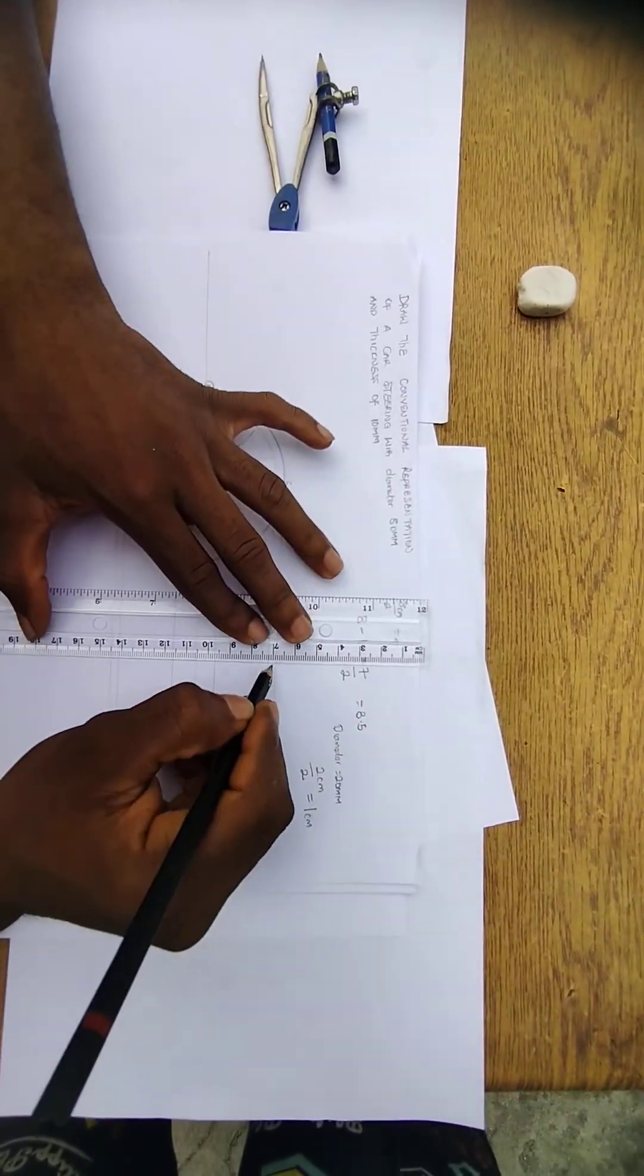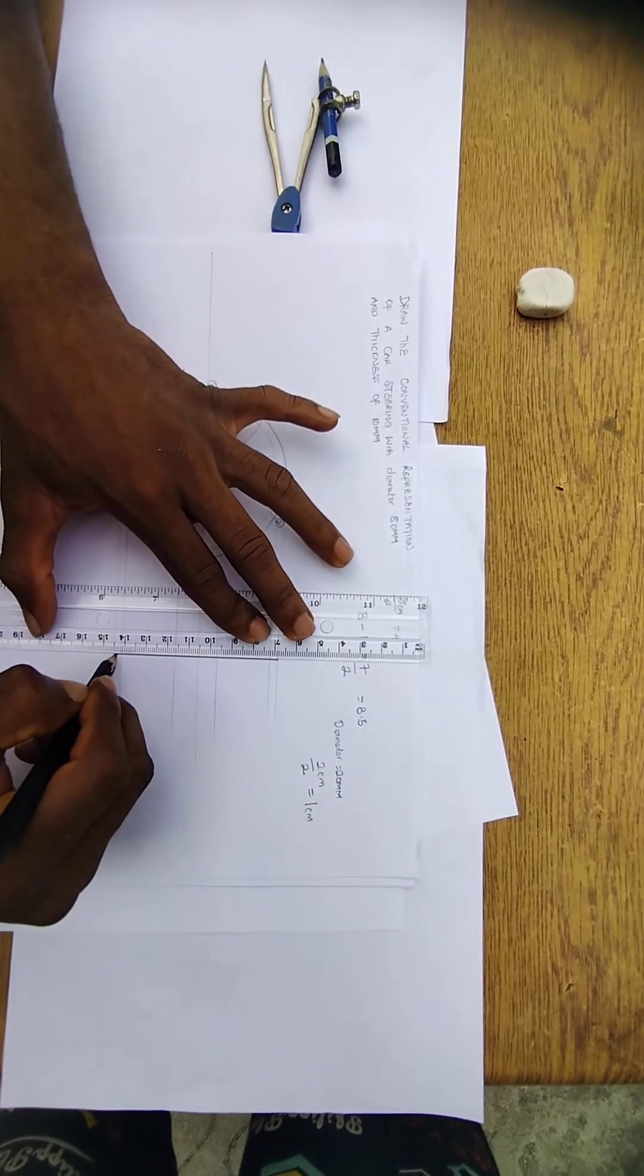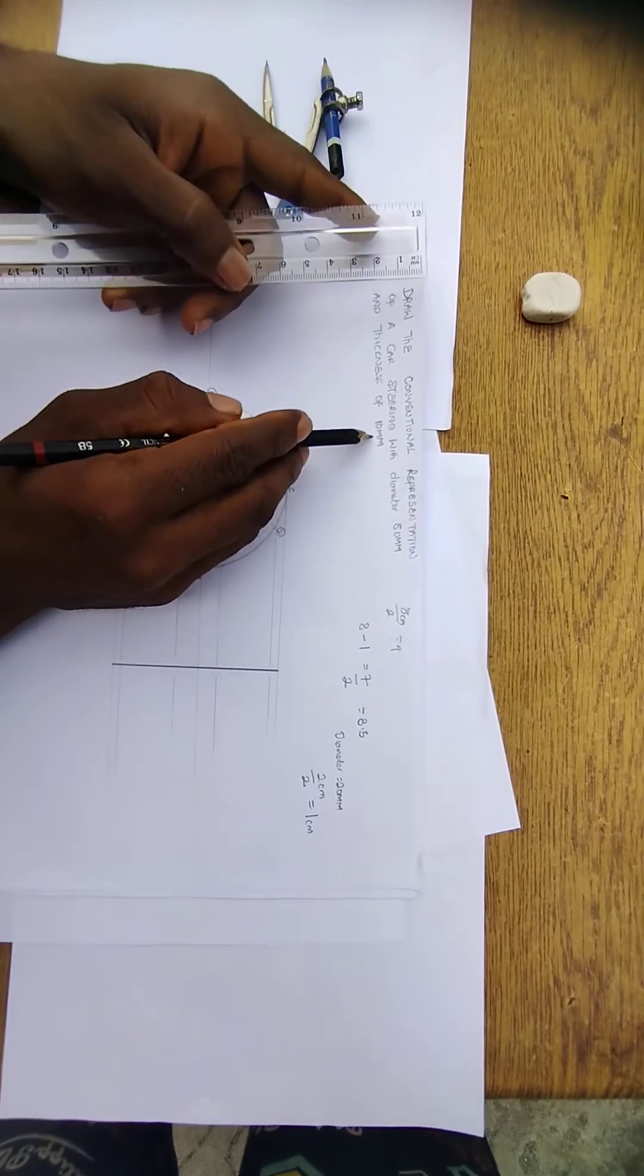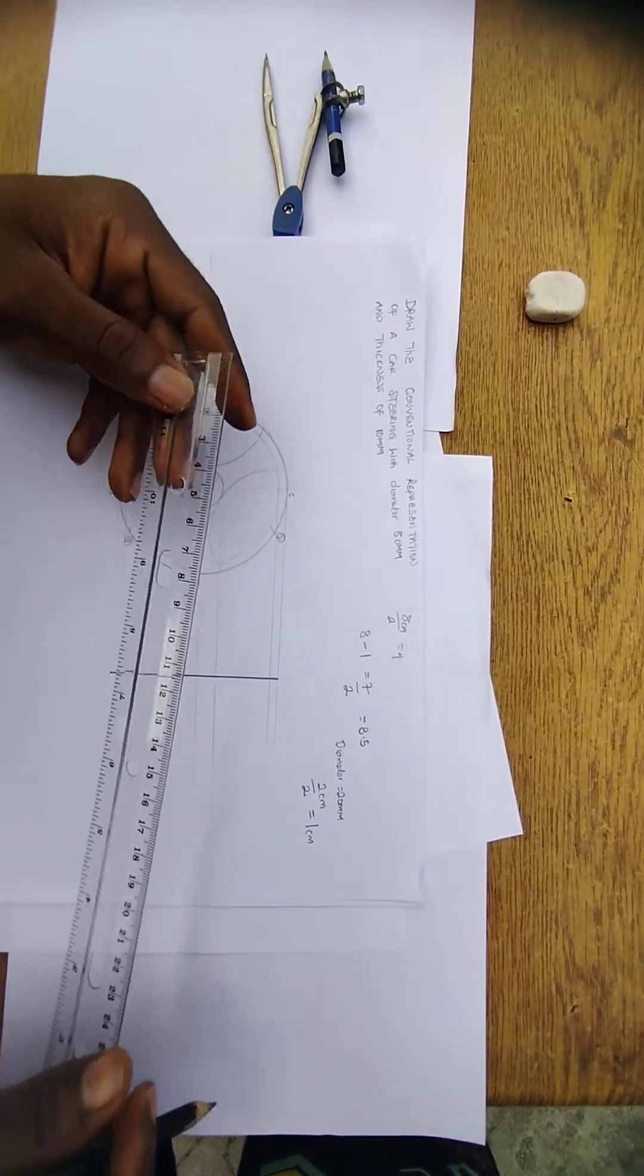With any point of your choice, you come here and draw a very thick line. Now this place is the thickness. Now they say the thickness is 10 mm, which is 1 cm. So what do you do?